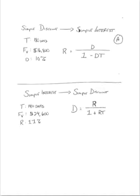Let's look at example one, letter A. We're taking a simple discount rate and we're going to convert that to simple interest.